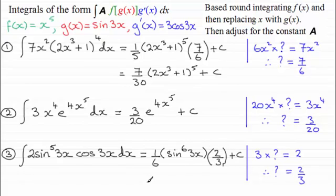And just a question of cleaning this up now, 1 sixth times 2 thirds, that's going to be 2 18ths, which reduces down to 1 ninth. So you've got 1 ninth, sine of 3x, all raised to the power 6. And then plus that constant of integration, c. OK.